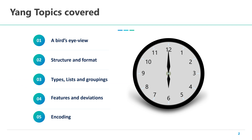In this video, we will cover the following introductory topics. We will start with a bird's eye view describing some salient features of Yang. We will then describe the basic structure and format for Yang. This will be followed by some of the key components of this data modeling language, namely types, lists, groups, features and deviations. We will conclude the session by touching upon the encoding formats that are used for representing the Yang data model.